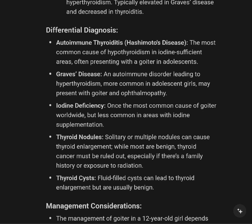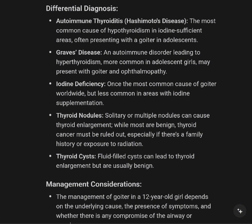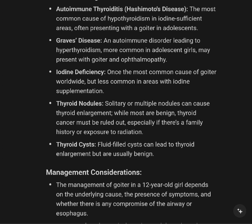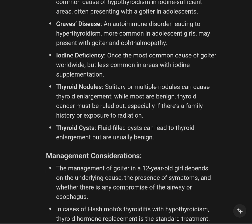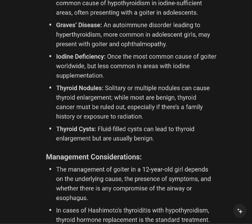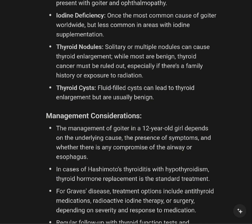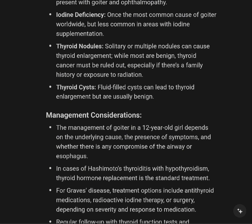Differential diagnosis: Hashimoto's disease is the most common cause of hypothyroidism, often presenting with goiter in adolescence. Graves' disease is an autoimmune disorder leading to hyperthyroidism, more common in adolescence, and may present with goiter and ophthalmopathy. Iodine deficiency was historically the most common cause of goiter but is less common in areas with iodine supplementation. Thyroid nodules — solitary or multiple — can cause thyroid enlargement. Thyroid cancer must be ruled out, especially with family history or concerning features.